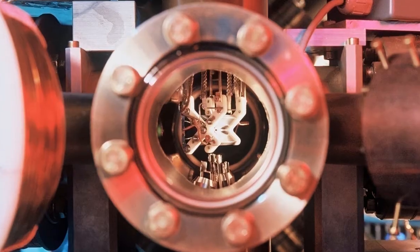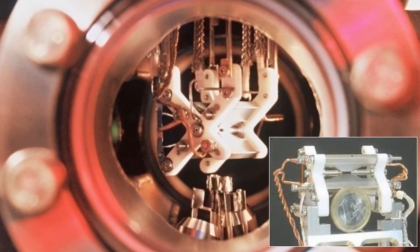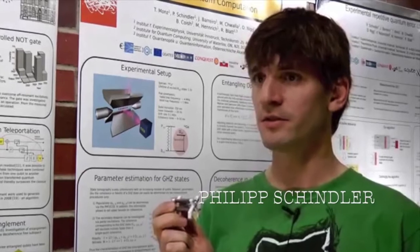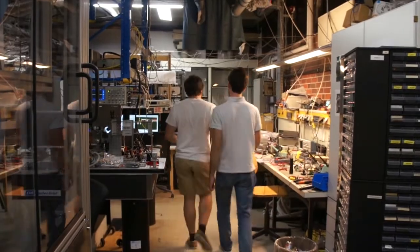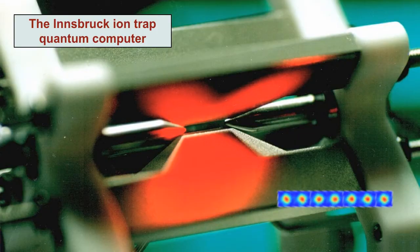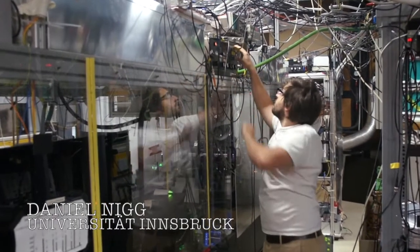In our lab, we work with a linear ion trap inside a vacuum chamber. Inside this, we store strings of ions which we can cool with the help of lasers to almost zero temperature. These ion strings form the central storage and processing unit of our ion trap quantum computer.